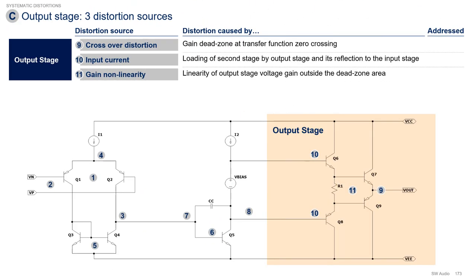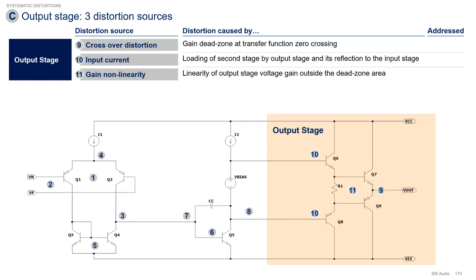Finally, for the output stage, we also have three distortion sources. First, the most talked about distortion: crossover distortion, which relates to the gain dead zone at the transfer function's zero crossing of the output stage. Second, current gain, which relates to the loading of the second stage by the output stage and its reflection to the input stage. And third, gain linearity, which relates to the linearity of the output stage voltage gain outside the dead zone area. We will be doing deep dives into every single one of these distortions when we describe each section of the amplifier in later videos.